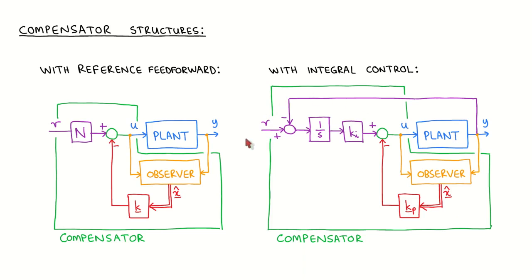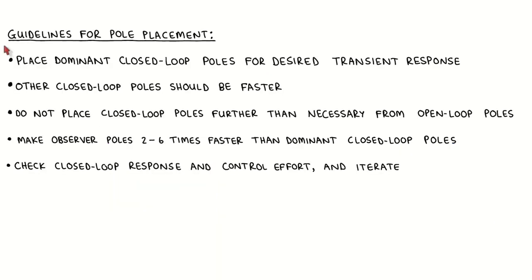For the compensator design, we have to first choose the structure of the compensator and then specify the desired closed-loop and observer poles. The compensator parameters are then directly obtained from these desired poles. The difficult decisions in state variable compensator design are where to place the desired closed-loop and observer poles. I want to give you a few guidelines, but they should not be taken as the only possible approach, but rather as a simple starting point for the compensator design. They might also not be applicable to certain types of plants.